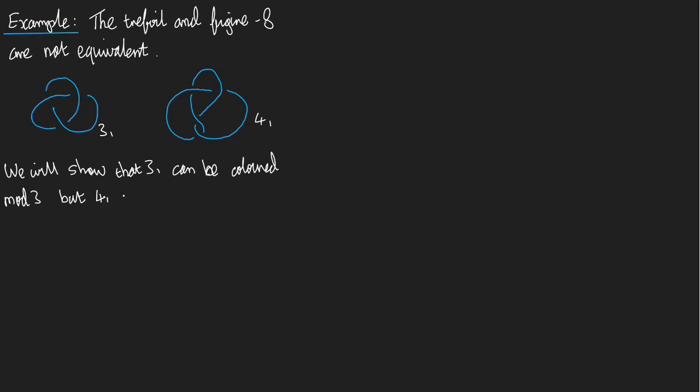But 4,1 cannot. Why 3? Because it's the one that makes these two facts true. It's the choice of n that makes this argument possible. So let's show that 3,1 can be colored mod 3, but 4,1 cannot. A coloring of 3,1 mod 3 is shown. So I know a coloring of 3,1 mod 3, so I'll just write it down. It looks like that.